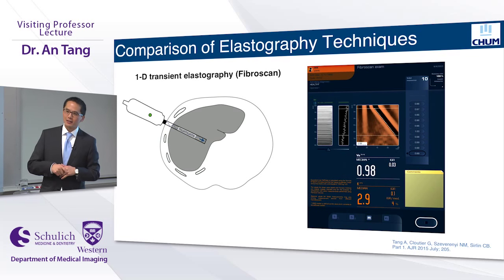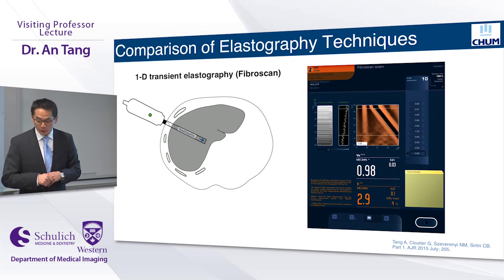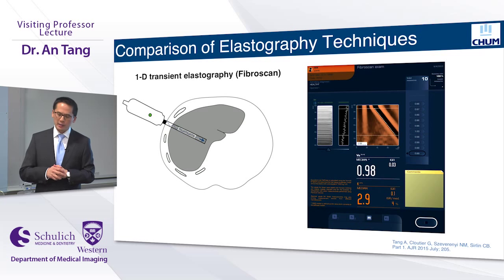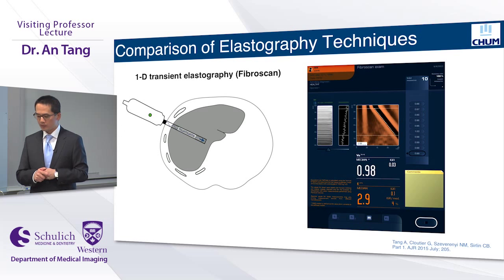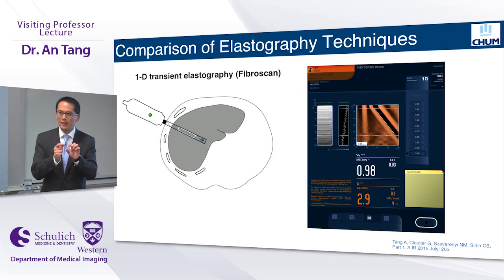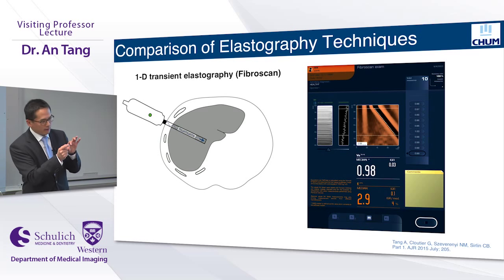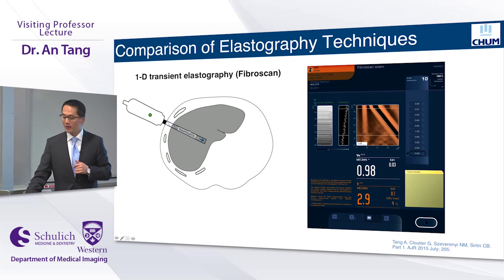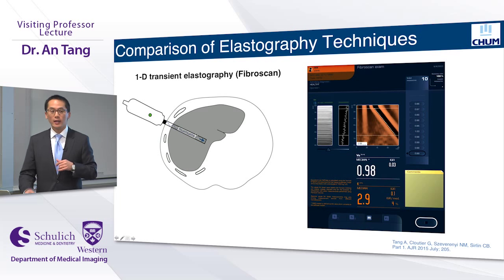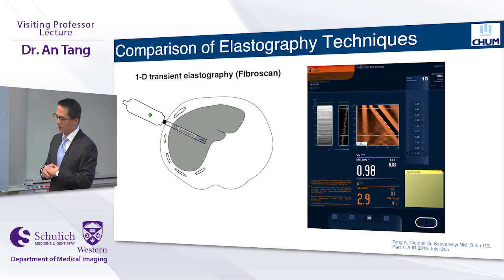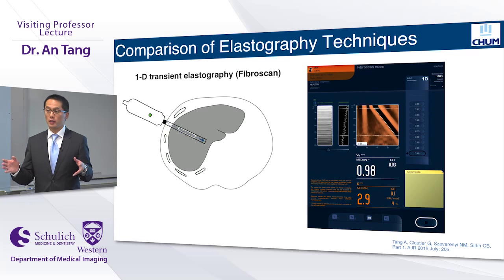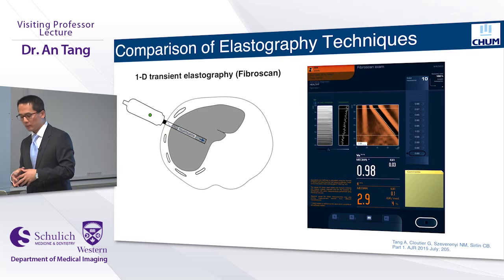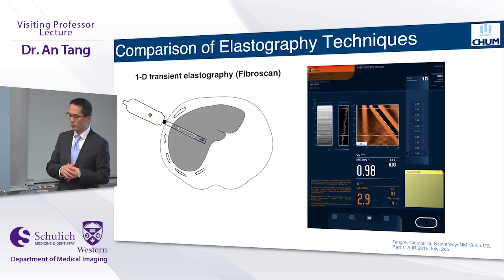You may have heard of 1D transient elastography, commercialized as Fibroscan by Echosense, used as a point-of-care instrument by hepatologists and internists to assess liver fibrosis. This machine is essentially a piezoelectric crystal mounted on a vibrating piston placed against the skin at an intercostal location. Shear waves are propagated in the liver tissue and tracked with ultrasound beams at very high speed. Depending on the shear wave speed, we can assess liver stiffness. This technique doesn't produce an anatomical image — there's no B-mode image, just M-mode and A-mode images — and based on the slope, we can estimate liver stiffness.